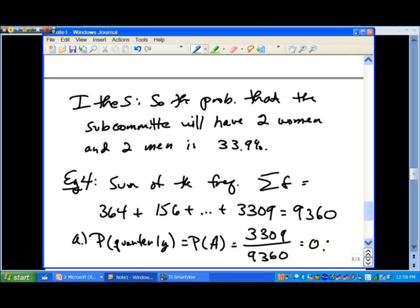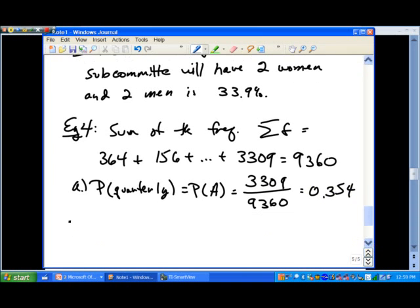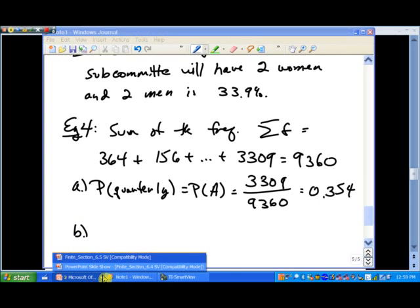We're going to divide that and I get 0.354 when I divide it there. So this means that the probability that the periodical was a quarterly that the guy chose is about 35.4%.